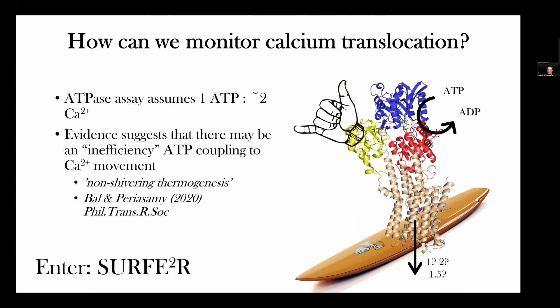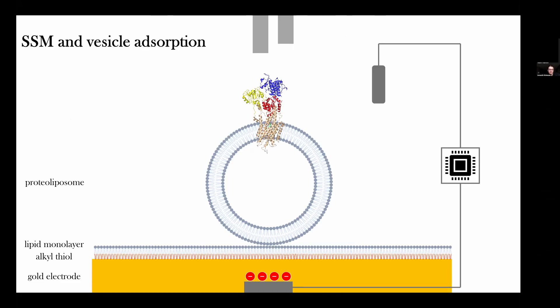Changing gears slightly: there is a phenomenon that suggests sarcolipin might encourage non-shivering thermogenesis. This was identified in mice — I recommend checking out the work by Bal and Periasamy from 2020, where they identified non-shivering thermogenesis as an inefficiency in SERCA utilized by animals to generate heat in the absence of shivering. We wanted to see if we could recapitulate these effects from a molecular biology point of view, and to do that we wanted to directly monitor calcium translocation using the SURFER instrument.